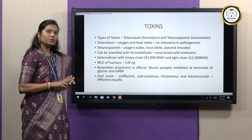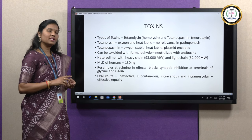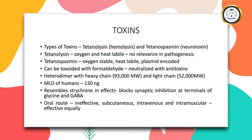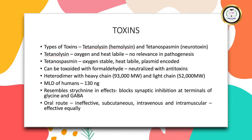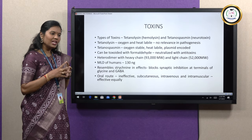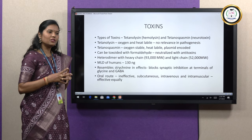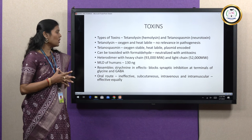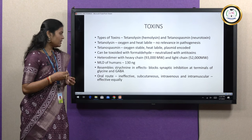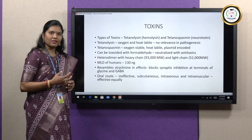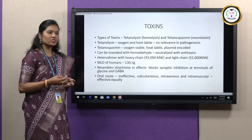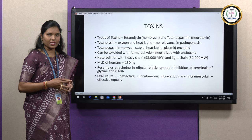The heterodimer is composed of two components: one is a heavy chain and another is a light chain. The heavy chain is of molecular weight 93,000 while the light chain is of molecular weight 52,000. The minimum lethal dose of tetanospasmin in humans is just 130 nanograms, and this toxin resembles strychnine in its effects. Strychnine is basically a toxic pesticide.